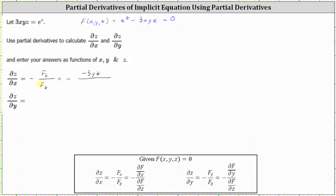The denominator is the partial of F with respect to z. So now we differentiate e to the z minus 3xyz with respect to z, treating x and y as constants. The derivative of e to the z with respect to z is e to the z, minus the derivative of 3xyz with respect to z, which is 3xy, because the derivative of z with respect to z is one. Notice here we have two negatives that simplify to a positive. So we can write the final partial derivative as 3yz divided by the quantity e to the z minus 3xy.